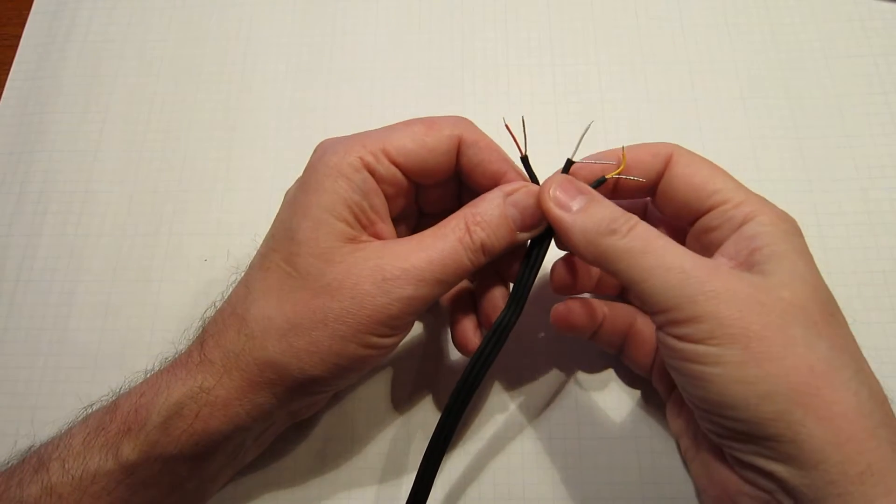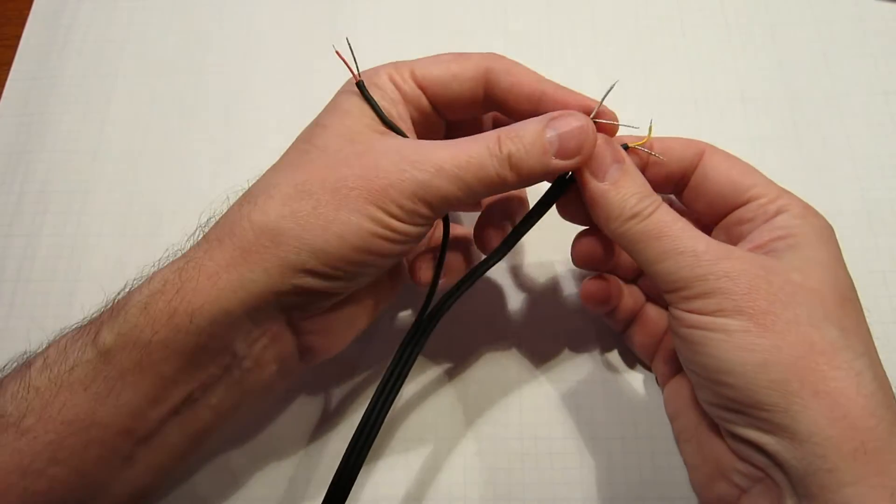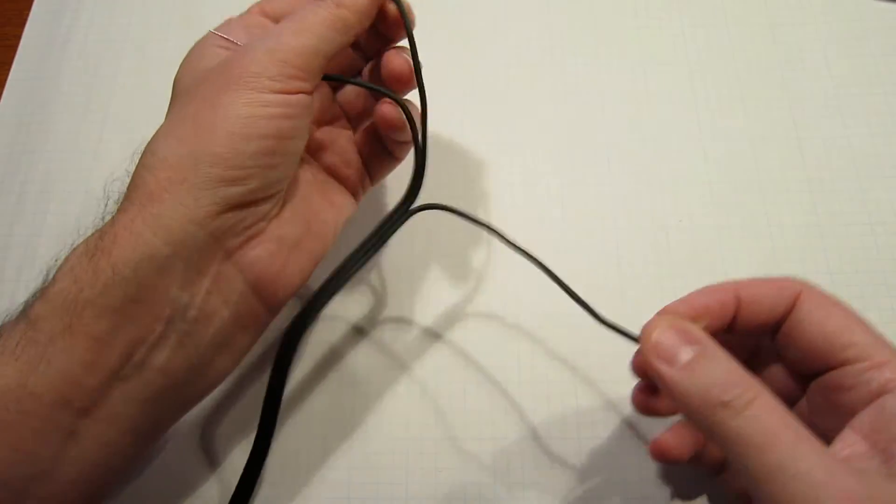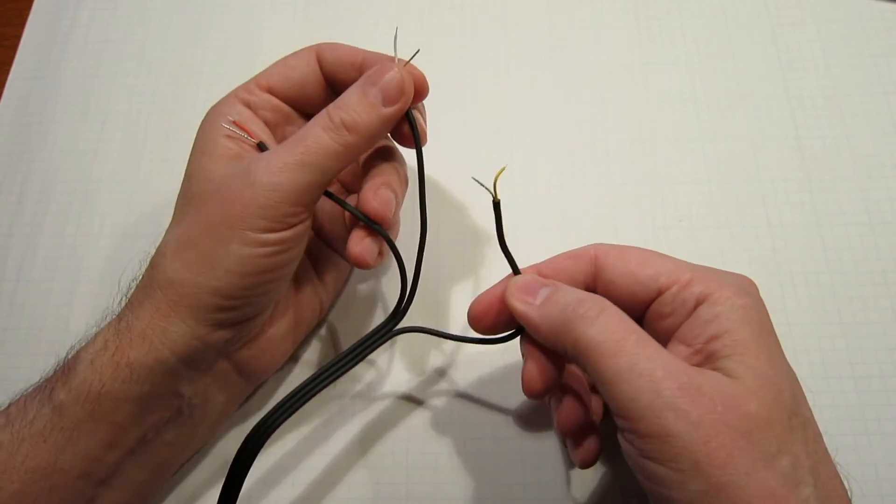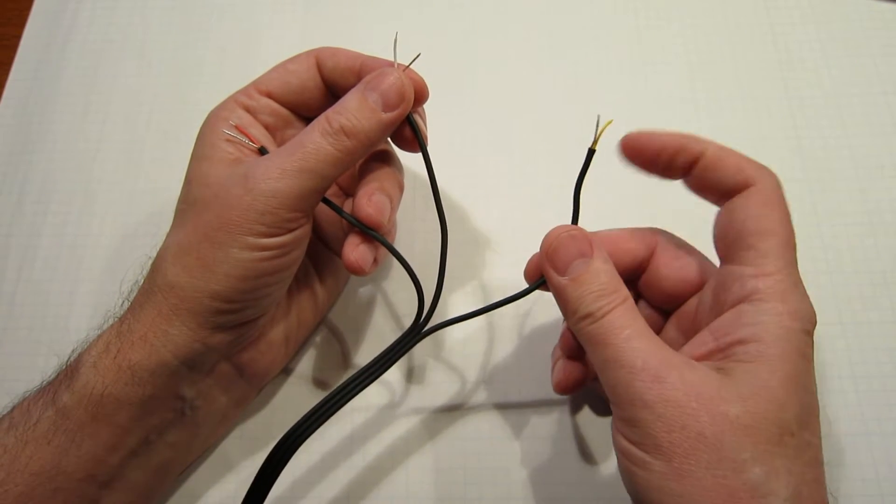The first thing we need to do is pull back some of the wire to get a little more room. We're not going to use this yellow wire initially, but don't cut it off or anything.